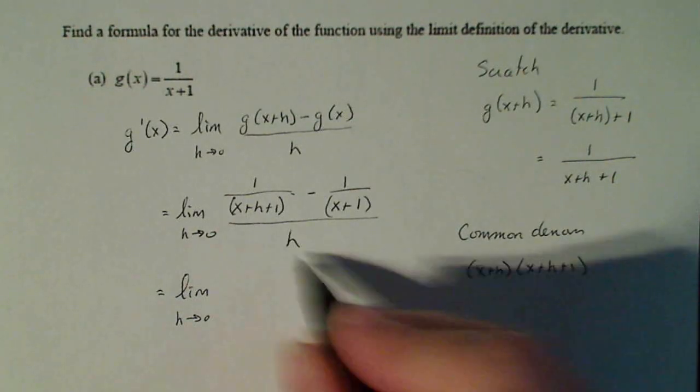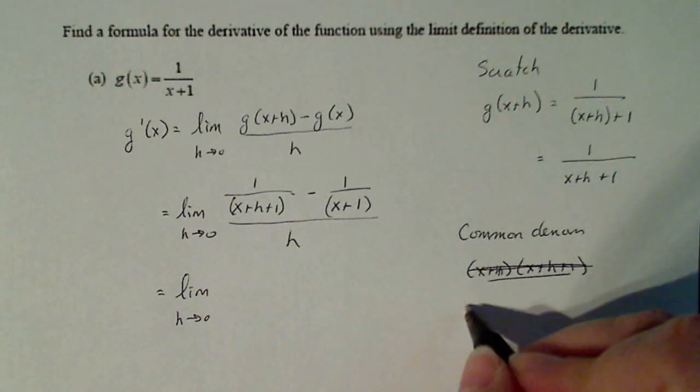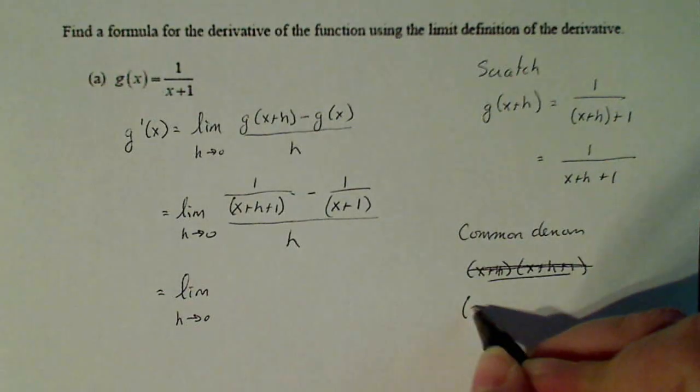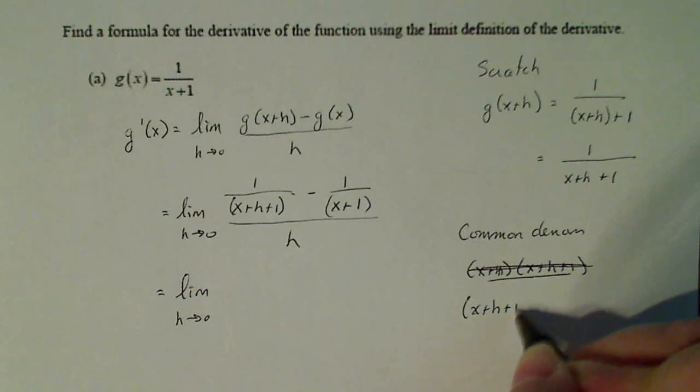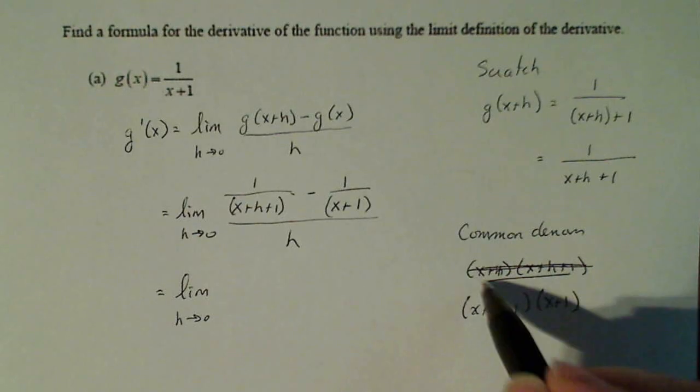I'm sorry, x+1 here. Let me try that again. All I want to do is multiply the two together. (x+h+1), which is this guy, times (x+1). That's your common denominator.